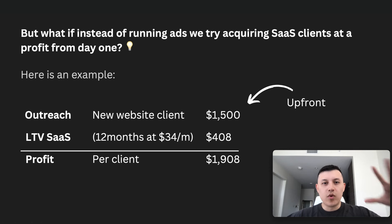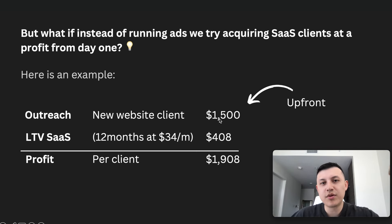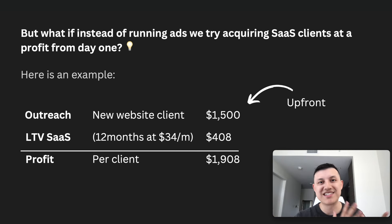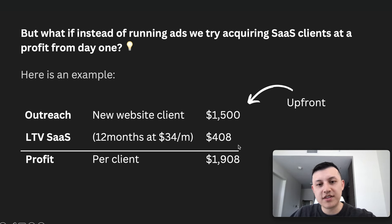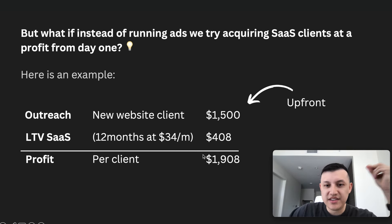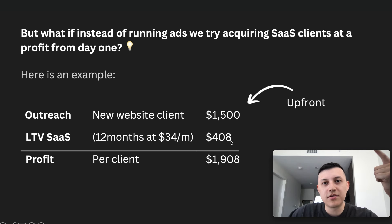At our agency, we help local businesses with their online presence — getting them a website, Google reviews, SEO. We do outreach, get a new website client, and they typically pay us anywhere between $1,000 and $2,000 to build their website upfront, so we have profit from day one. Then we sign them up to our SaaS because they need software to host that website. We charge them roughly $34 a month, and with an average LTV of 12 months, that's about $408 in additional recurring profit.